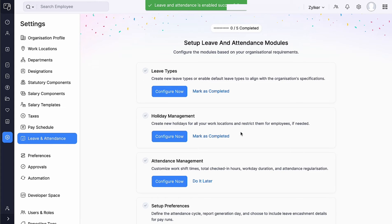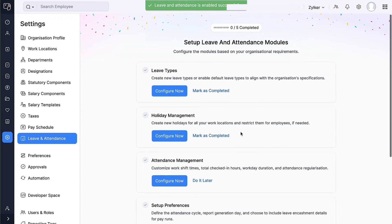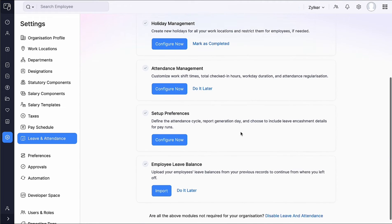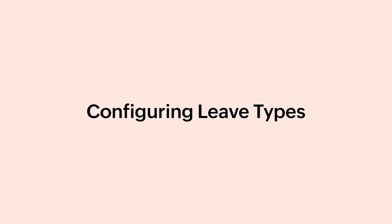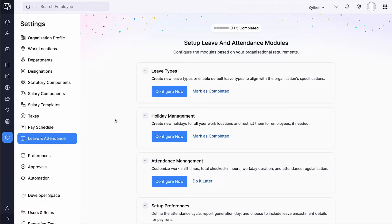The five sections are: leave types, holiday management, attendance management, setup preferences, and employee leave balance. Let's configure leave types for your organization and determine how much of each leave type your employees are entitled to, how leave accrues, and any conditions or restrictions associated with taking that leave. Click Configure Now.